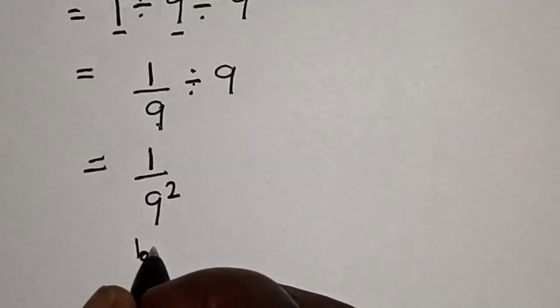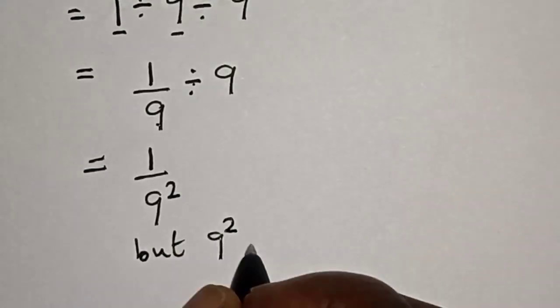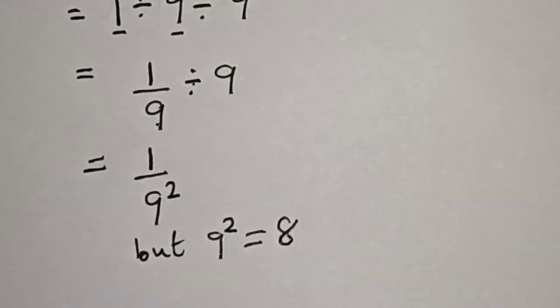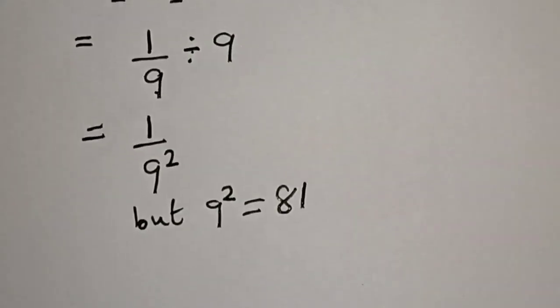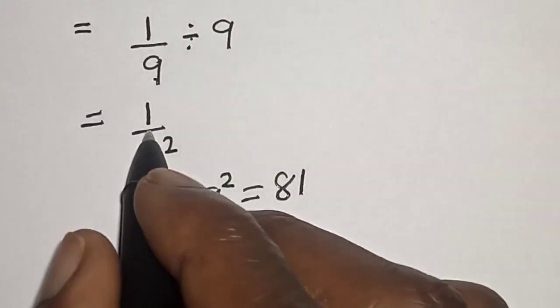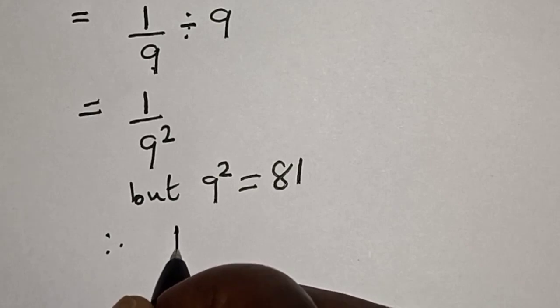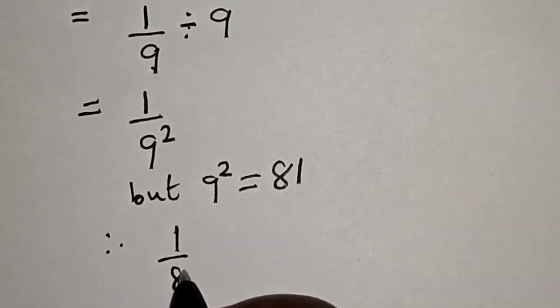But, 9 squared is equal to 81. Therefore, 1 divided by 9 squared, this is 1 over 81.